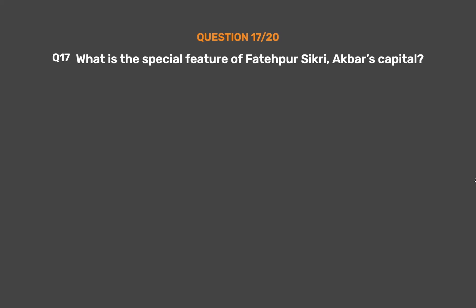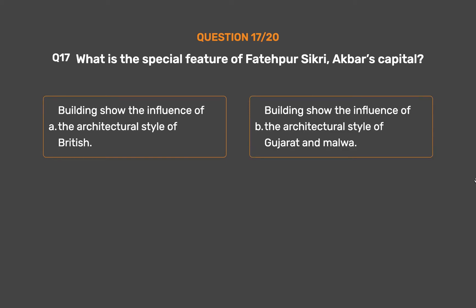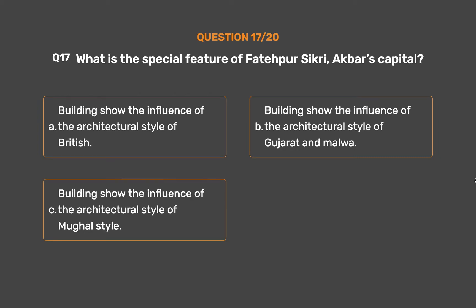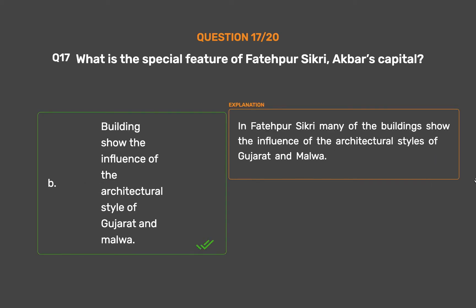Question No. 17: What is the special feature of Fatehpur Sikri, Akbar's capital? Option A: Buildings show the influence of the architectural style of British. Option B: Buildings show the influence of the architectural style of Gujarat and Malwa. Option C: Buildings show the influence of Mughal style. The correct answer is Option B. In Fatehpur Sikri, many of the buildings show the influence of the architectural styles of Gujarat and Malwa.